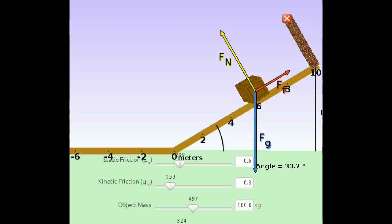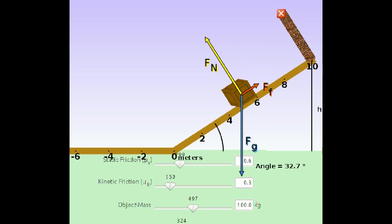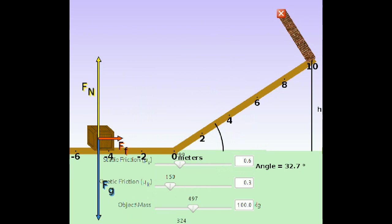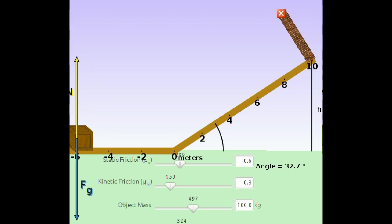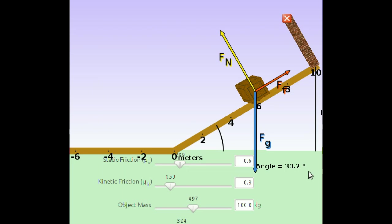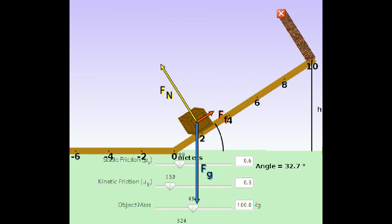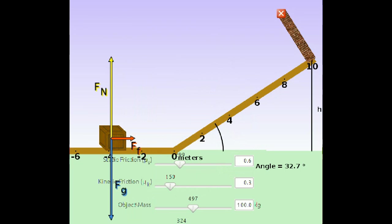Unlike static friction, which opposes other forces in order to prevent slipping from happening, kinetic friction opposes relative motion of surfaces. So when two surfaces are sliding relative to each other, there is a kinetic friction that tends to act in a direction that would stop the sliding.